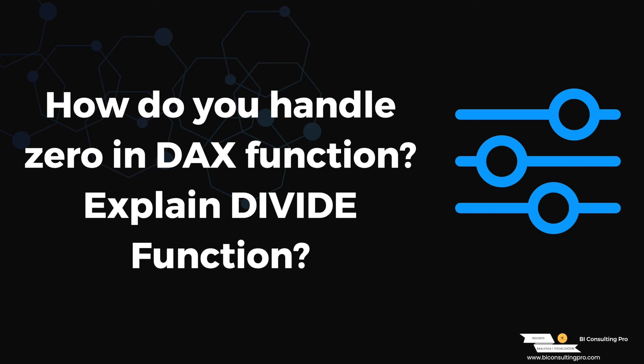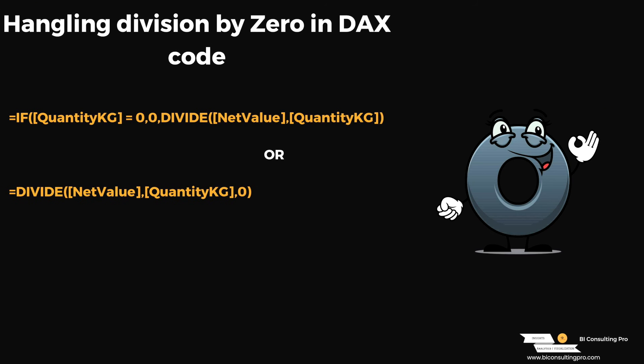How do you handle divide by zero? Explain the DIVIDE function. Whenever we divide something by zero, the result is undefined or infinite. To avoid this, you use the DIVIDE DAX function — when the denominator is zero, it automatically returns zero rather than an error. There are two approaches: you can write an IF condition checking for zero at the denominator, or you can simply use the DIVIDE DAX function directly instead of writing any IF condition.